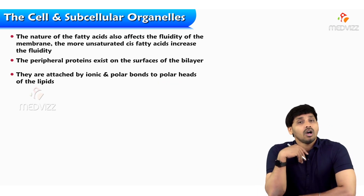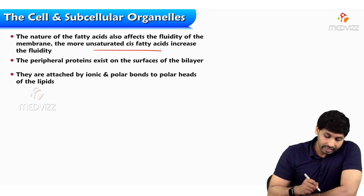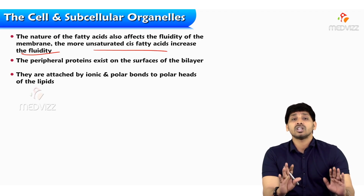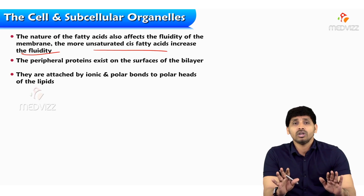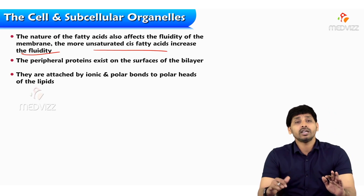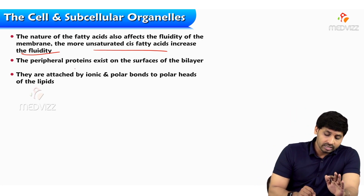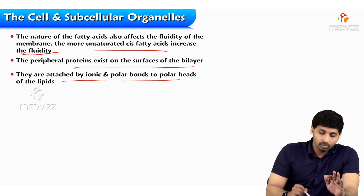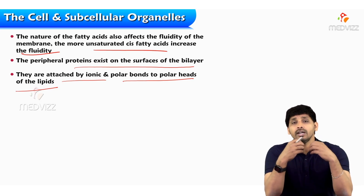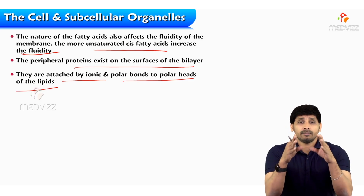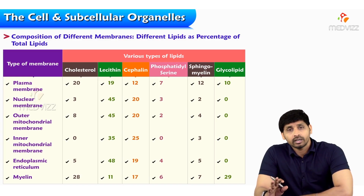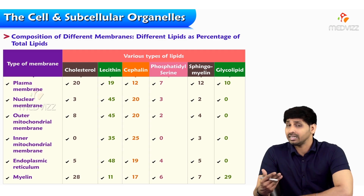The nature of fatty acids also alters membrane fluidity. More unsaturated fatty acids — those with double bonds, like linoleic acid and polyunsaturated fatty acids (PUFA) — increase fluidity, meaning more permeability. PUFA play a major role in biological membrane formation. Peripheral proteins exist on the surface of the bilayer, attached by ionic and polar bonds to polar parts of the lipids. The association of lipids and proteins is known as lipoproteins.